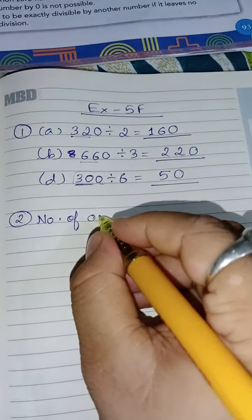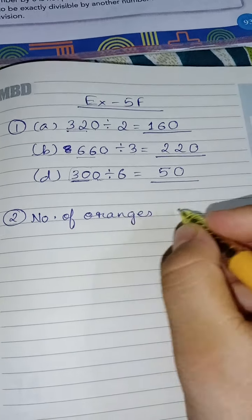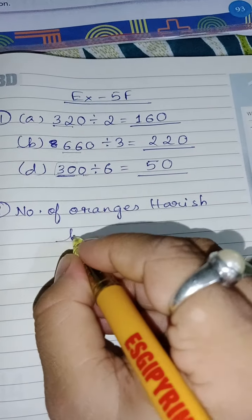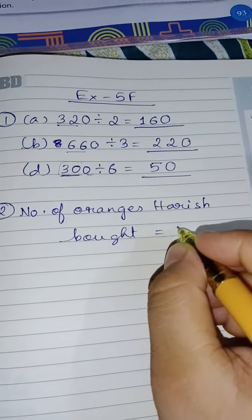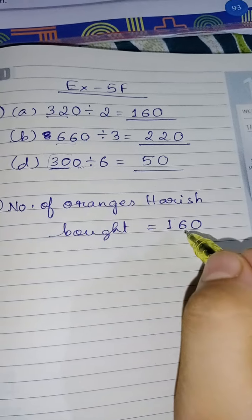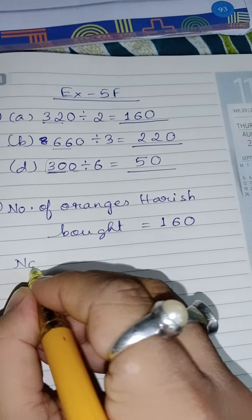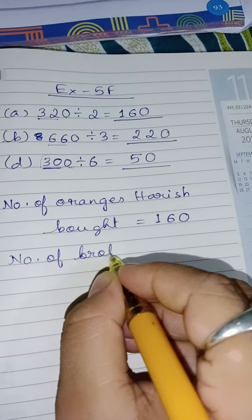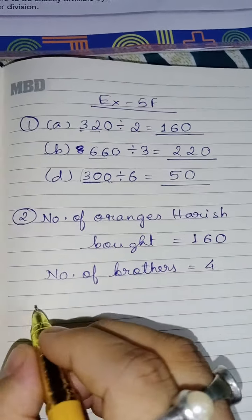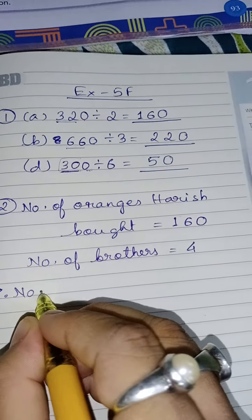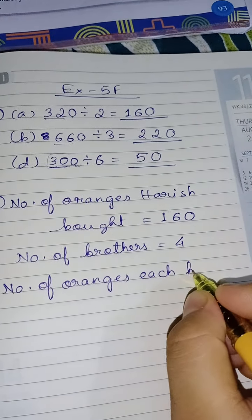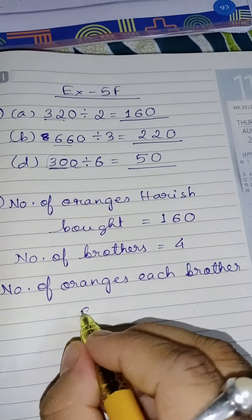So Harish bought 160 oranges. Number of oranges Harish bought is equal to 160. The second part of the question says that he divides these oranges equally among his 4 brothers. So how many brothers he has? Number of brothers, 4. So the question says how many oranges will each brother get? Therefore number of oranges each brother gets.